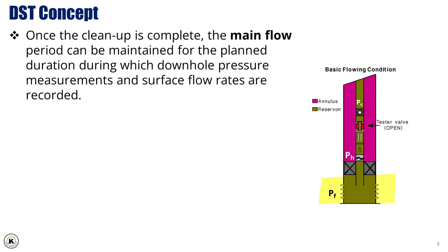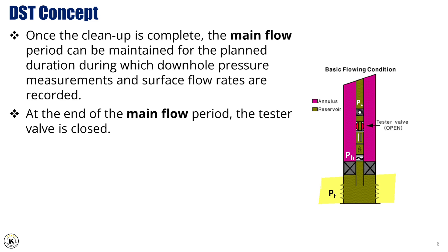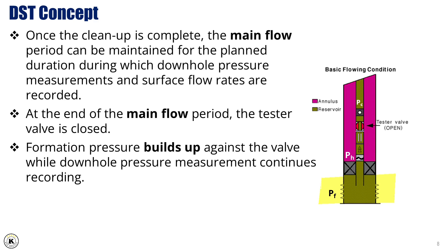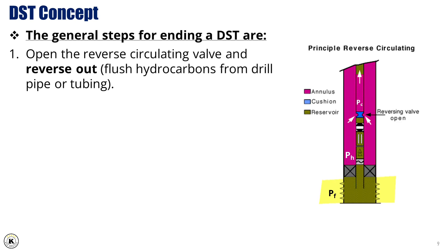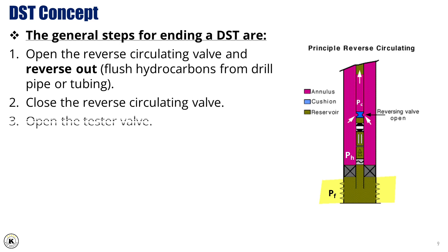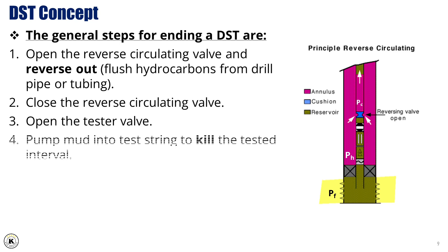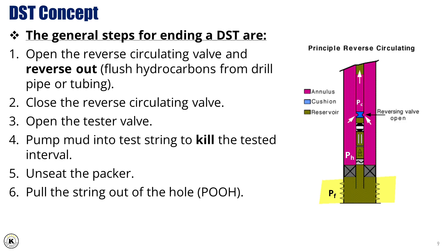Once the cleanup is complete, the main flow period can be maintained for the planned duration, during which downhole pressure measurements and surface flow rates are recorded. At the end of the main flow period, the tester valve is closed. Formation pressure builds up against the valve while downhole pressure measurement continues recording. The general steps for ending a DST are: 1. Open the reverse circulating valve and reverse out to flush hydrocarbons from drill pipe or tubing. 2. Close the reverse circulating valve. 3. Open the tester valve. 4. Pump mud into test string to kill the tested interval. 5. Unseat the packer. 6. Pull the string out of the hole.